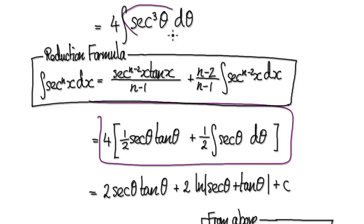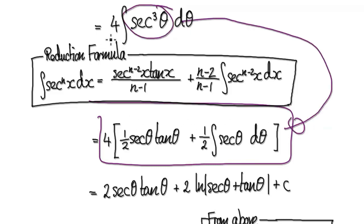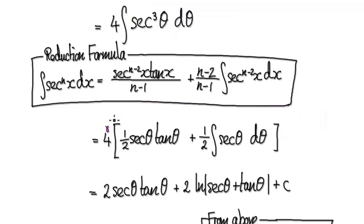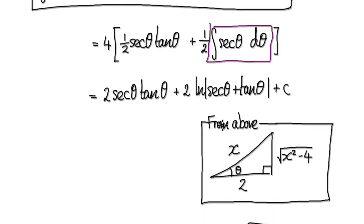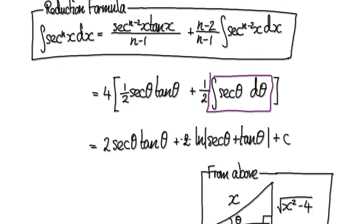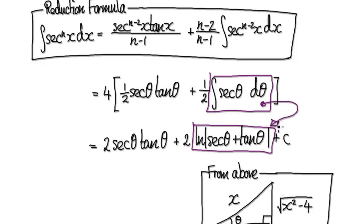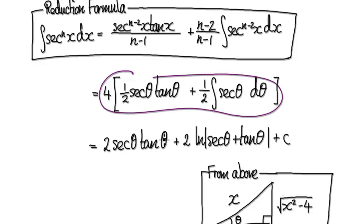We've done this many times, so I'm assuming you can do it now. Use the reduction formula — that will take you to the next expression. Tidy this up: this times this, and this times this. When you integrate secant θ, it gives you this expression here, and I'm expecting you to know this. If you don't understand this step, track back to one of the earlier videos. Integrating this will then give you the result, so from this whole expression that will take you to the integrated form in terms of θ.